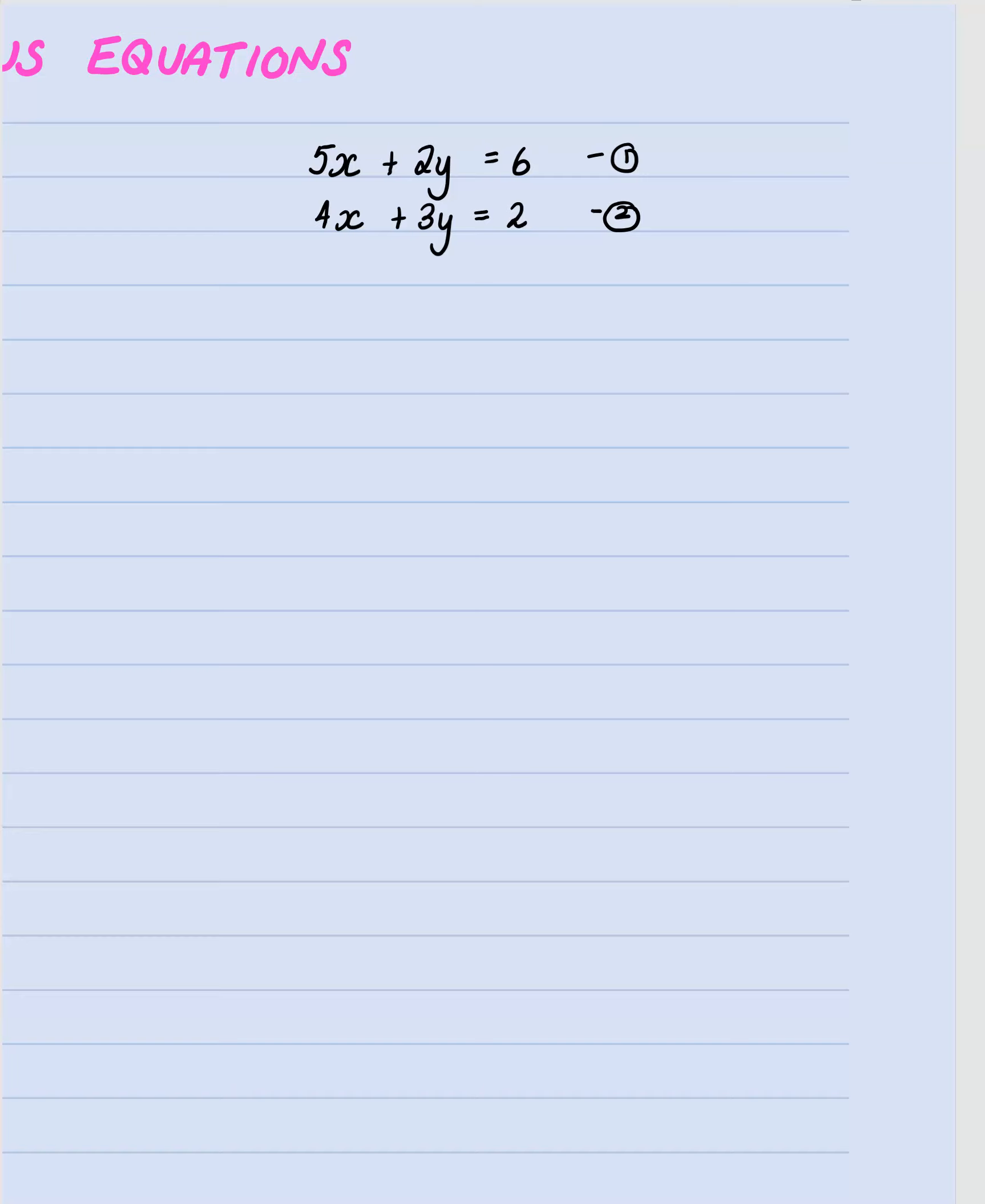That would be 20. So if I wanted to eliminate the x's I'd have to times by four. So that would have to be times four and I'd have to times this by five and then we'd get 20x and they'd disappear.